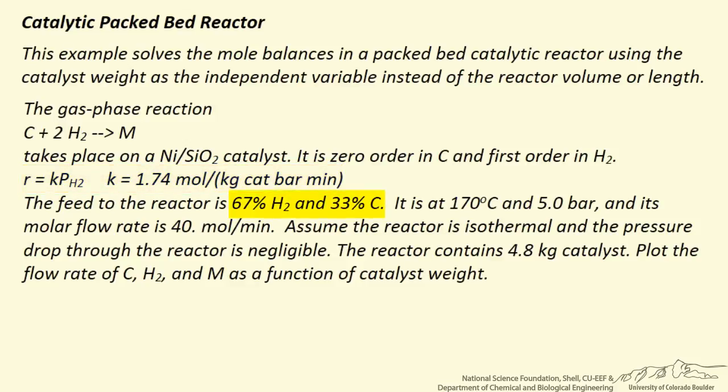Feed is two thirds hydrogen and one third C, given temperature and pressure and its molar flow rate. Now we are going to assume the reactor is isothermal just to make the calculations easier to demonstrate the idea of solving the plug flow reactor with catalyst weight as an independent variable. And likewise we are going to ignore the pressure drop.